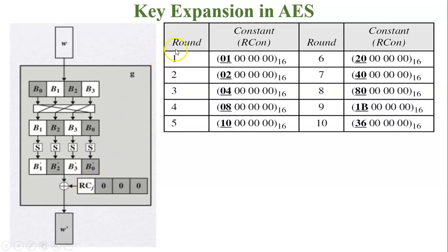When the first encryption round starts, it is 01. When the second encryption round starts, it is 02, 04, and up to the tenth round it is 36. So how are these numbers generated?